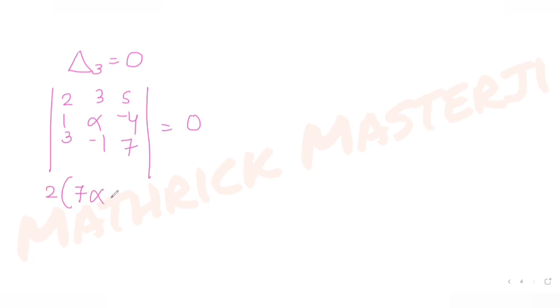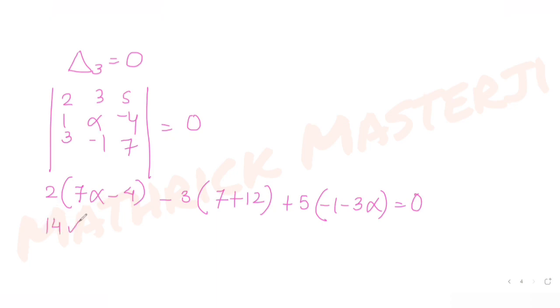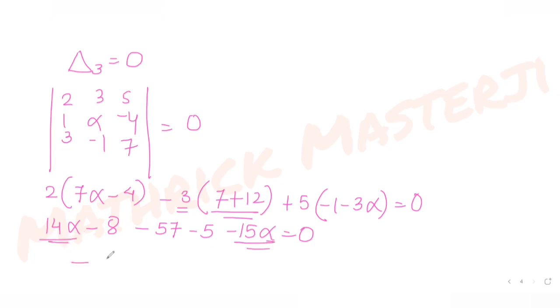Expanding delta 3: 2(7α - 4) - 3(7 + 12) + 5(-1 - 3α) = 0, giving 14α - 8 - 57 - 5 - 15α = 0. Solving: -α - 70 = 0, so α = -70.